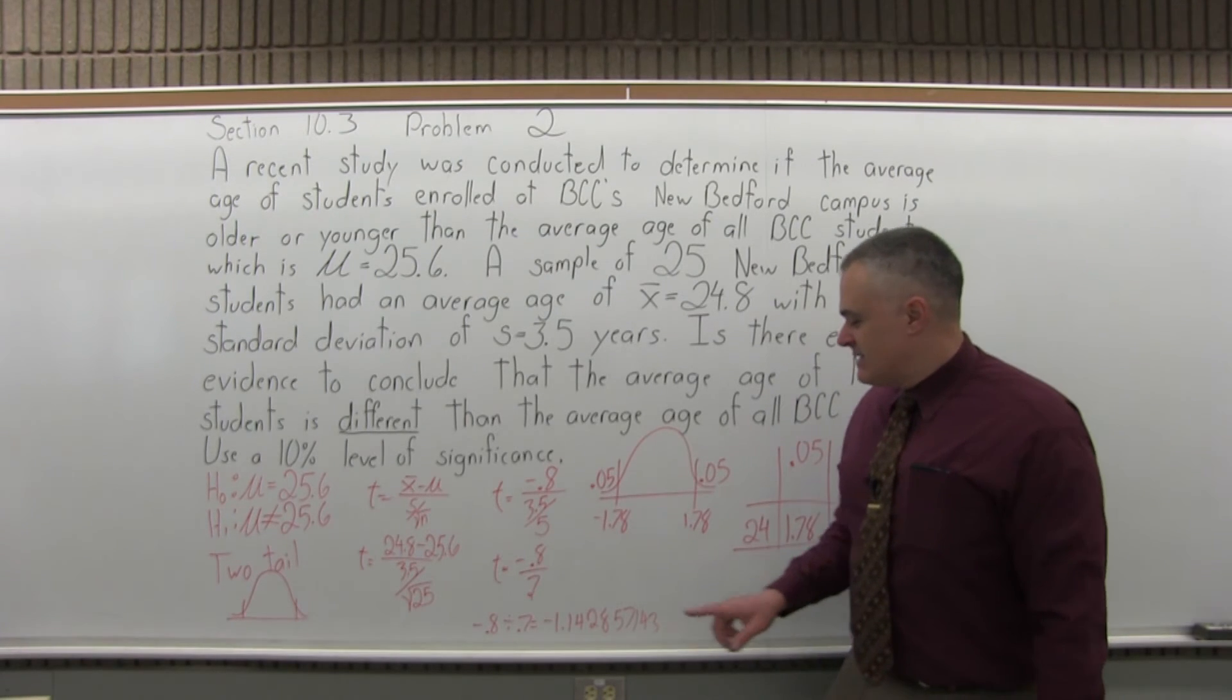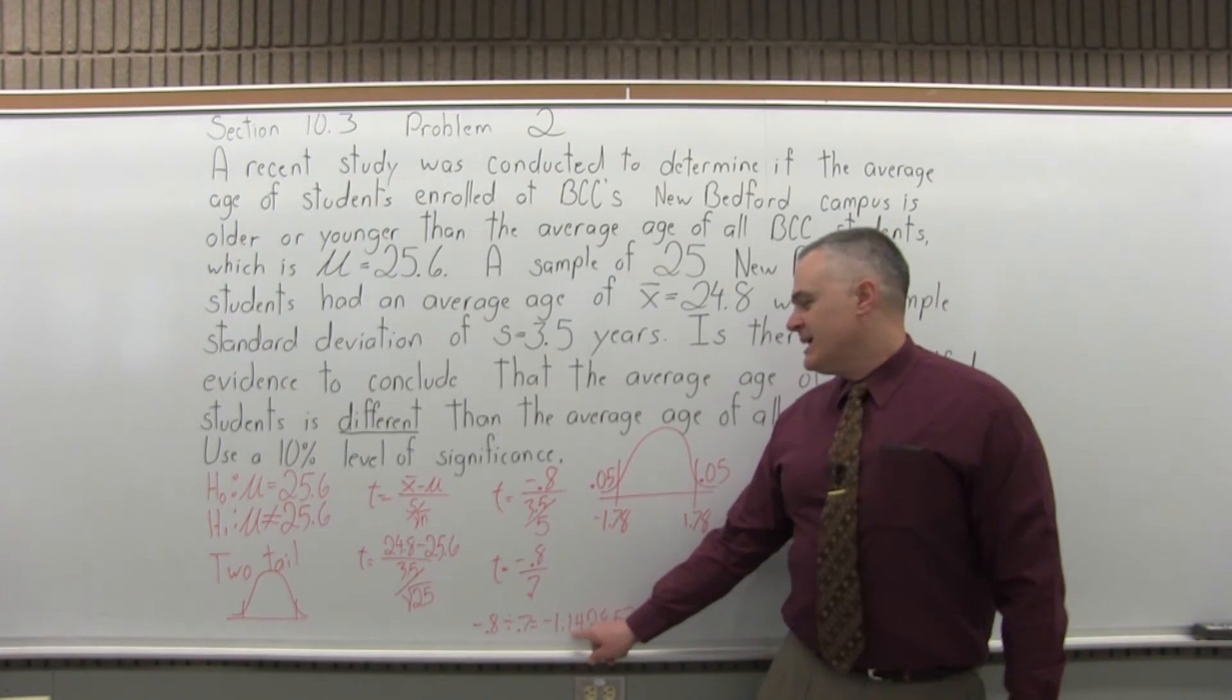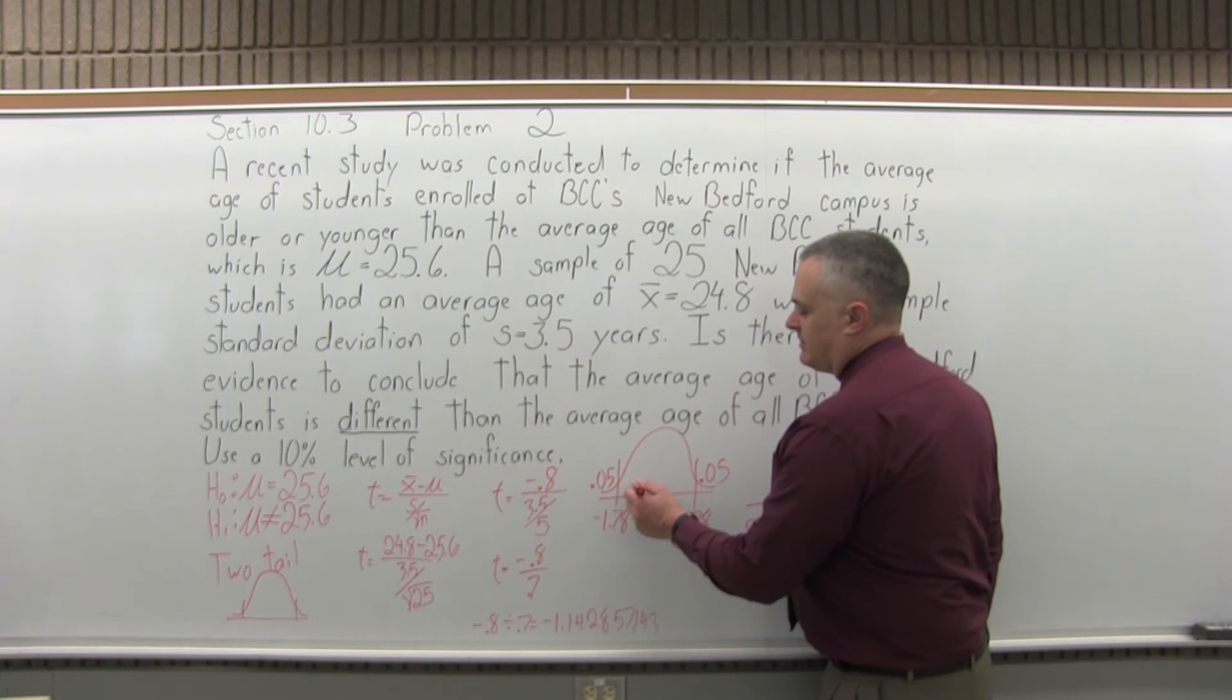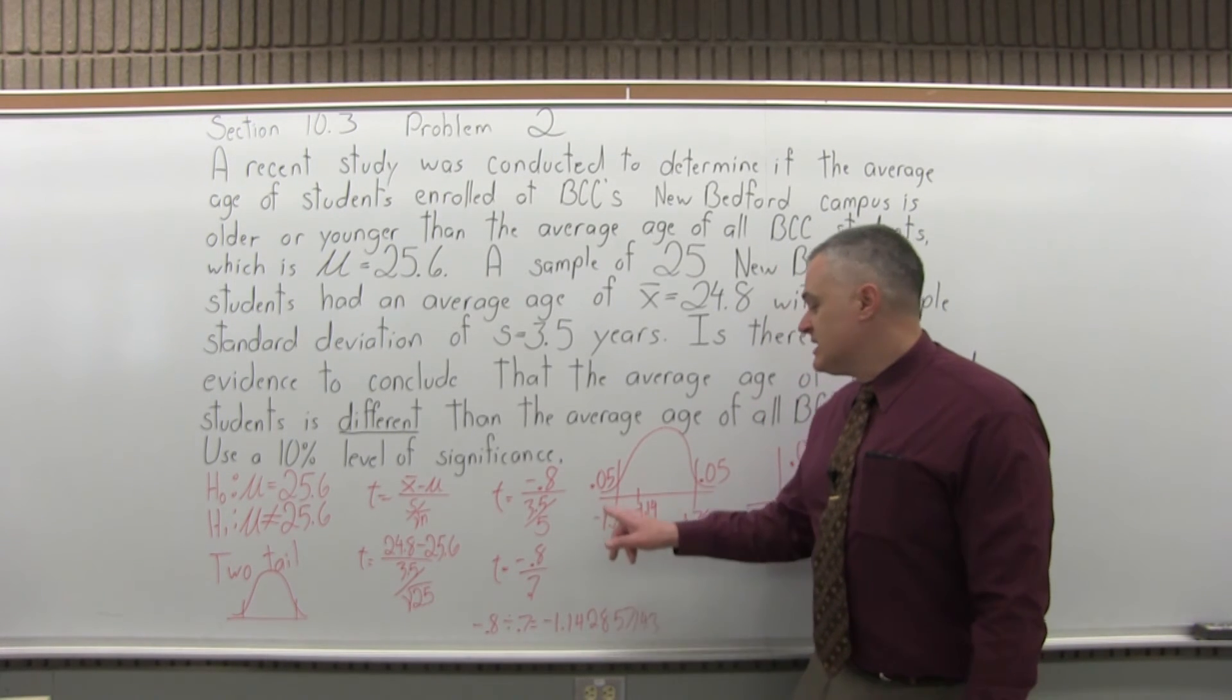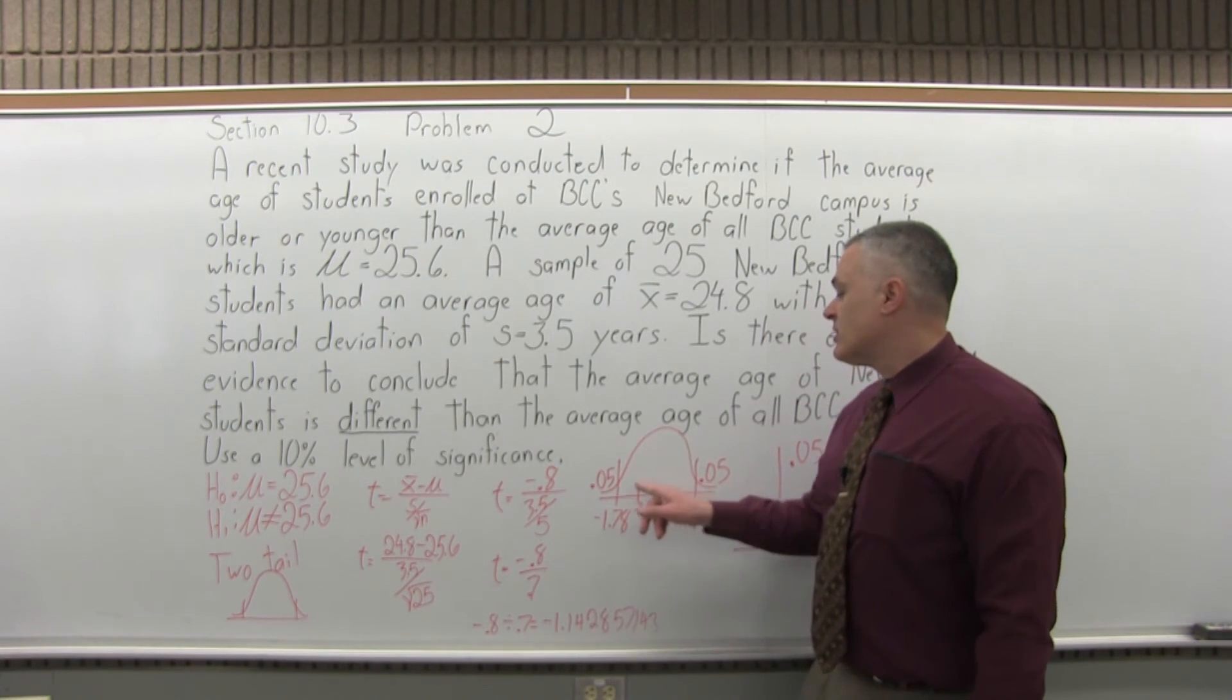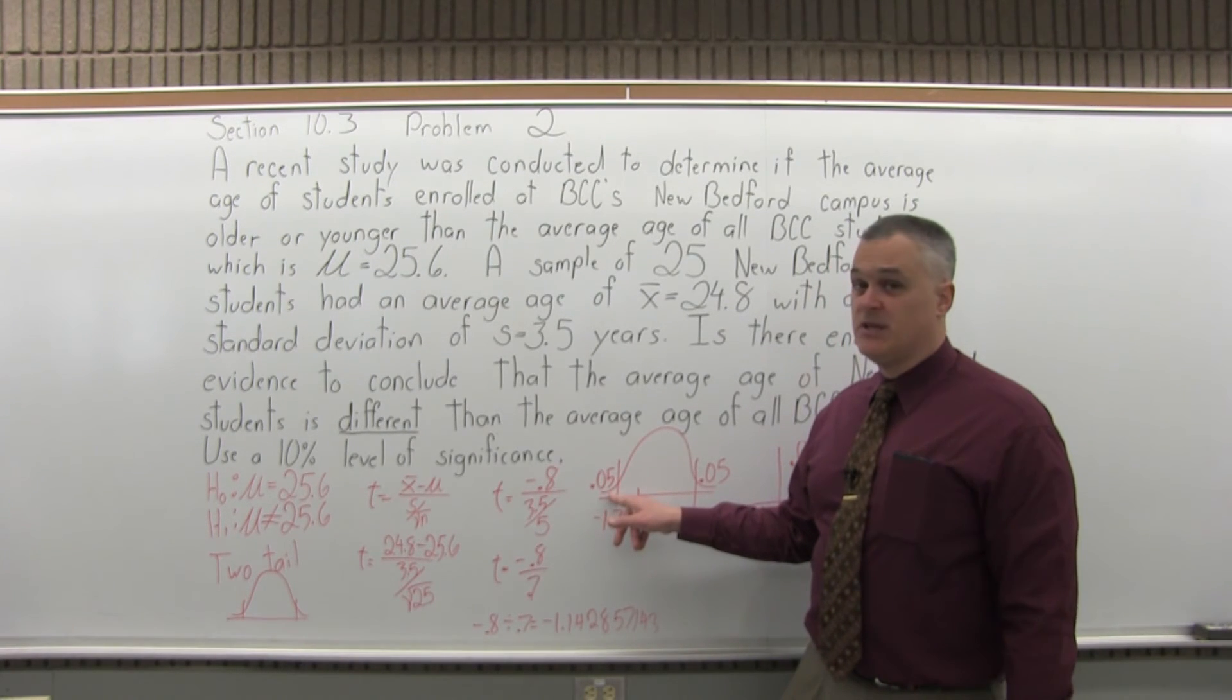Now the question is, our result of negative 1.14 is too close to the middle to really go into the either critical side. So since we have not gone out into the critical region, our conclusion, step six, state your conclusion. Our conclusion would be fail to reject the null.